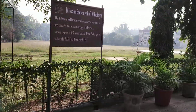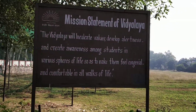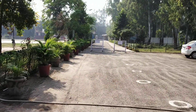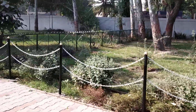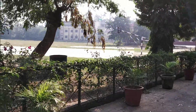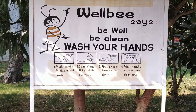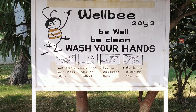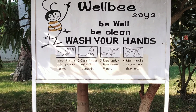Here it is written the mission statement of Vidyalaya. This is the way to the school. These are the small gardens on the right side, and on the left side the school grounds. Here is a board outside the garden: Be safe, be well, be clean. Wash your hands — it shows the procedure of washing your hands.